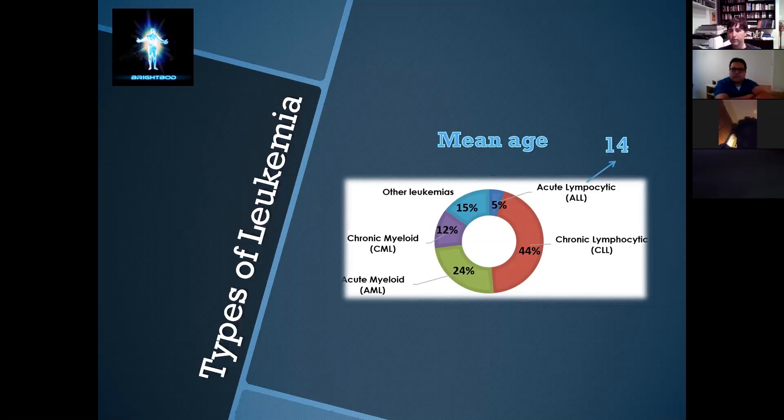The mean age of diagnosis of this one will be 14 years. For chronic myeloid leukemia will be 64, for acute myeloid leukemia 67, and for chronic lymphocytic leukemia will be 71. As you can see, both acute lymphocytic and chronic lymphocytic are at the edges of age.